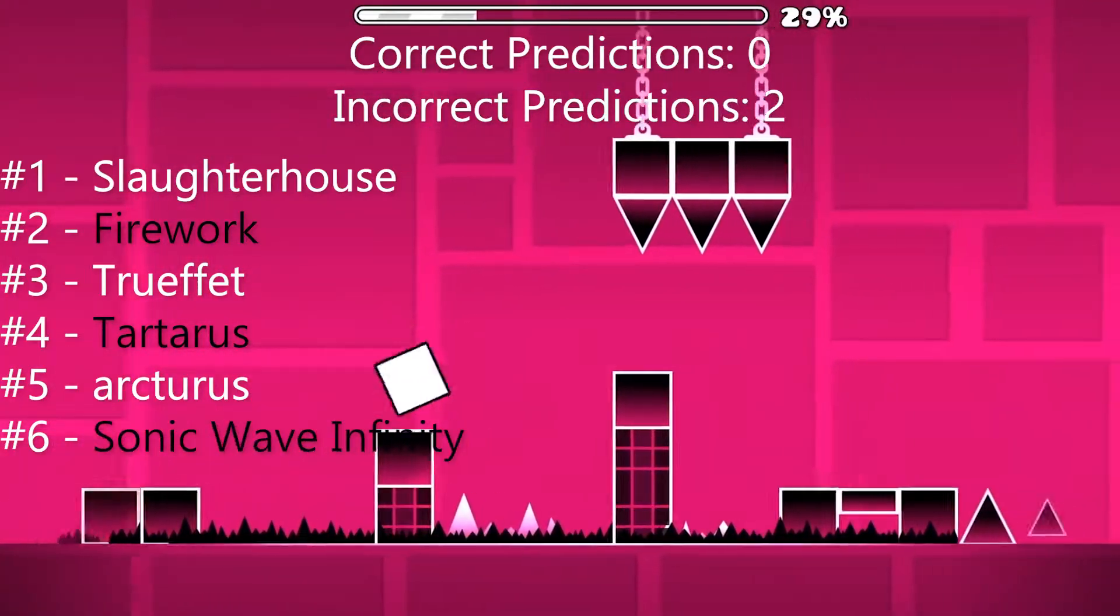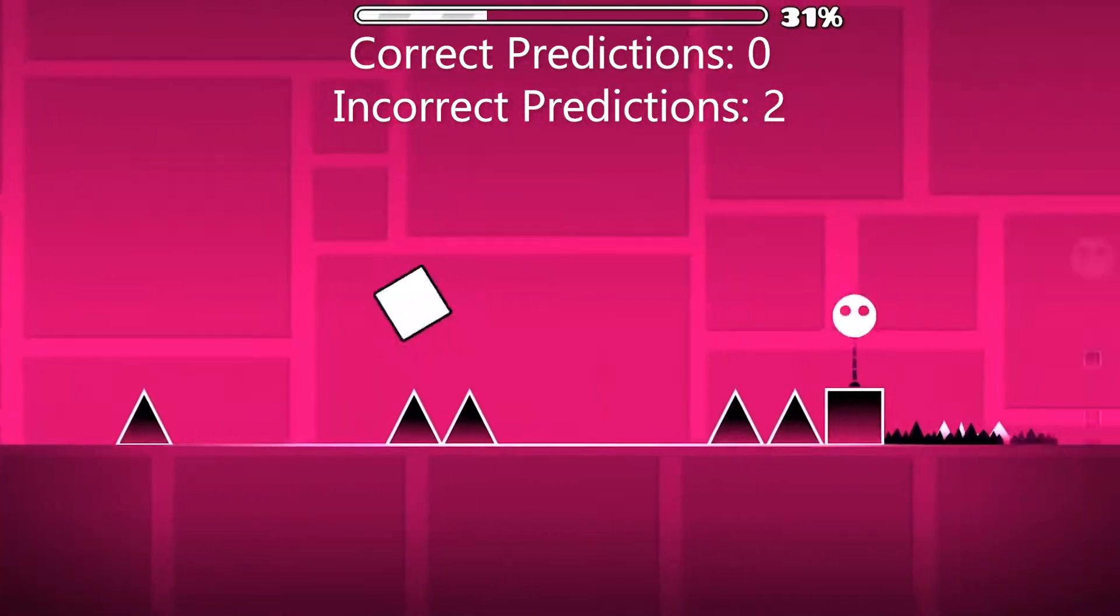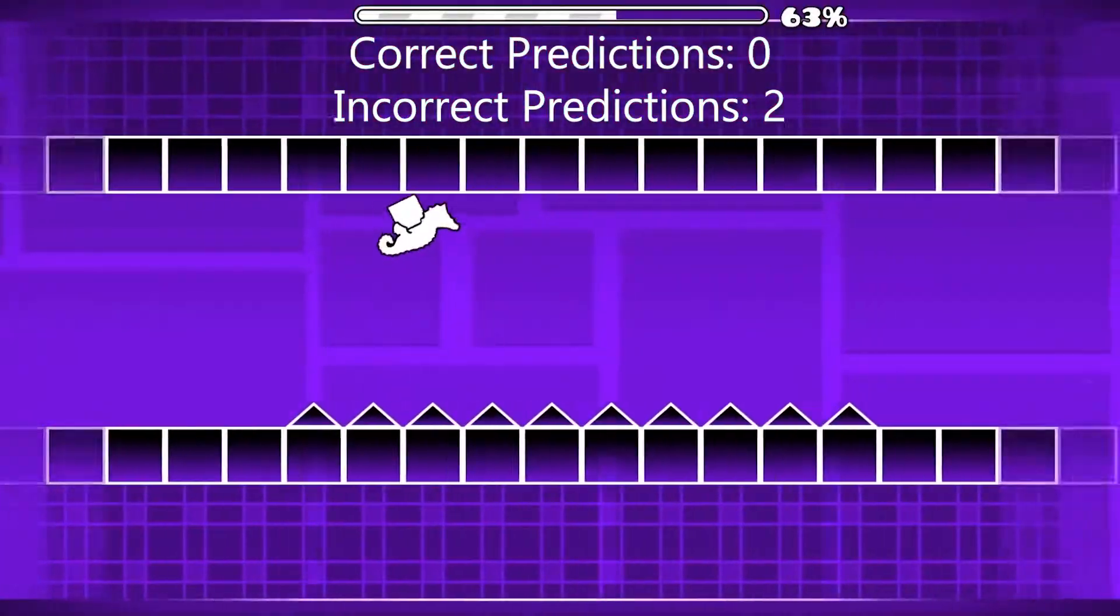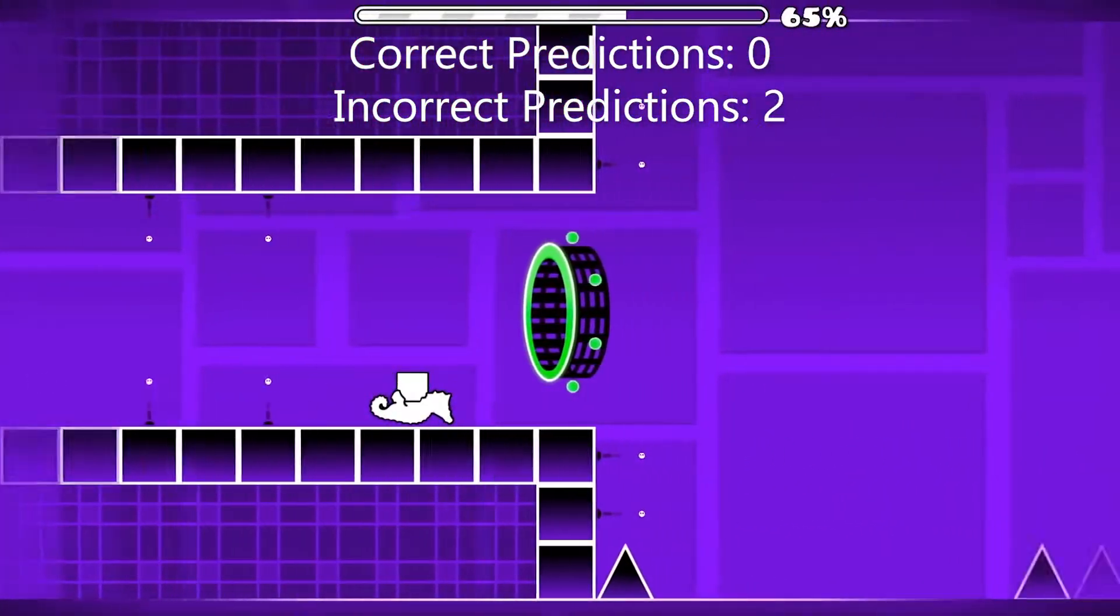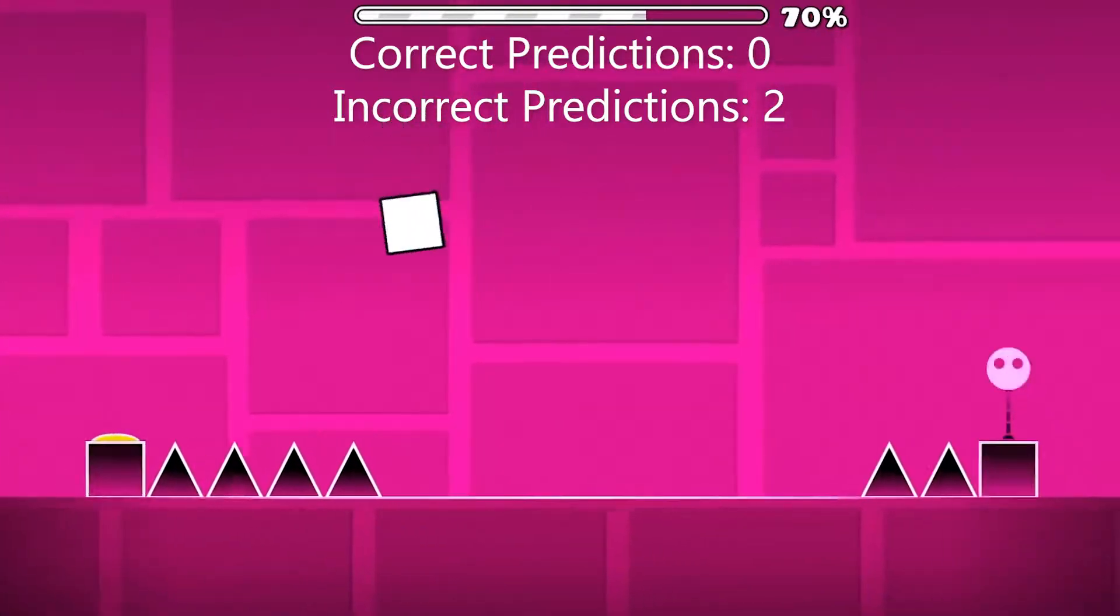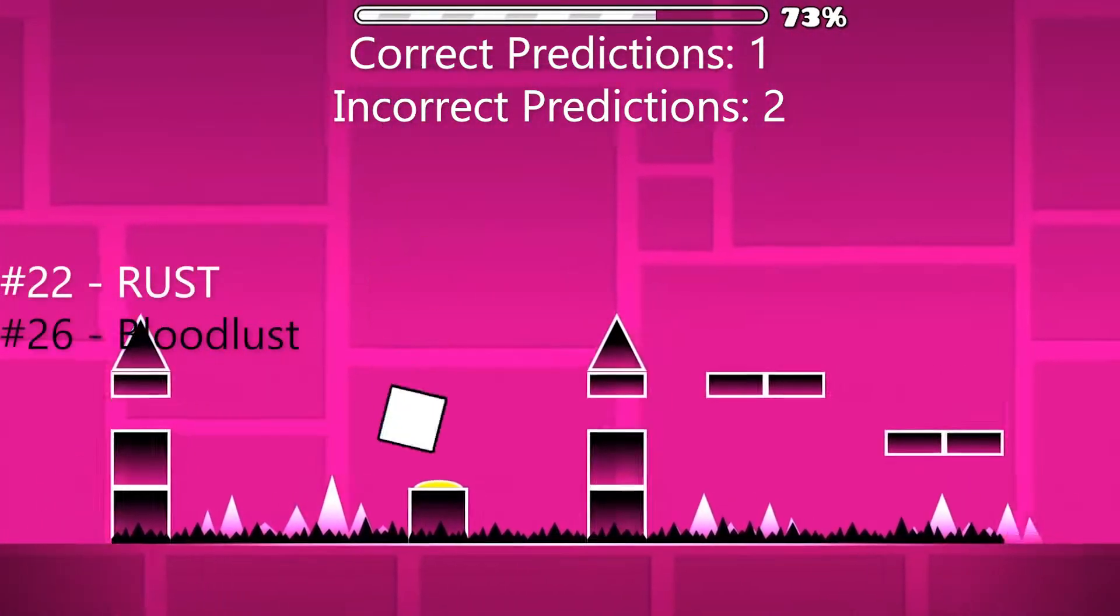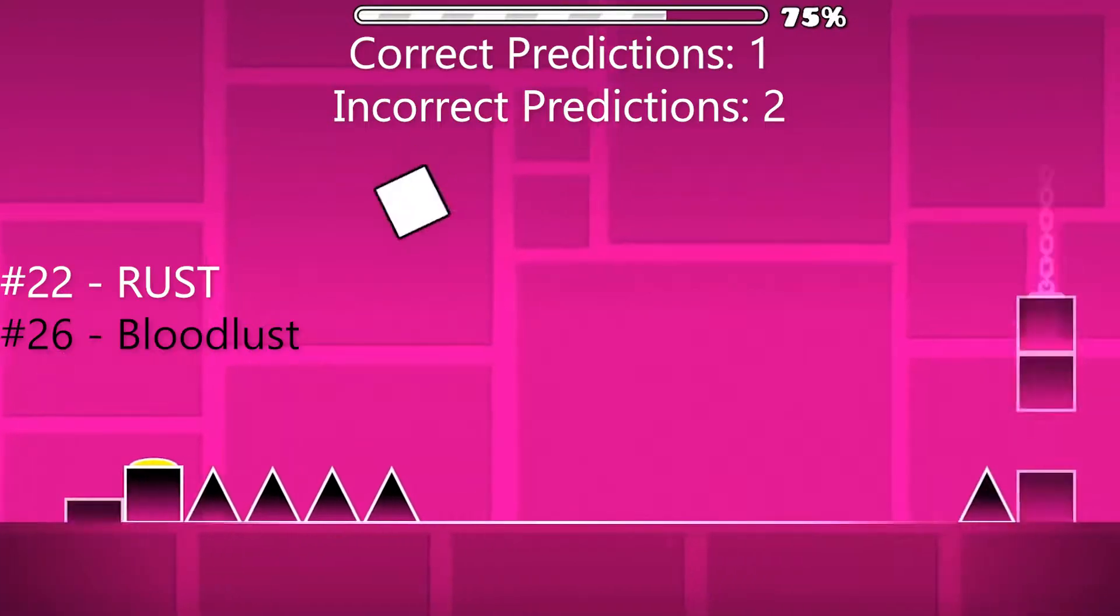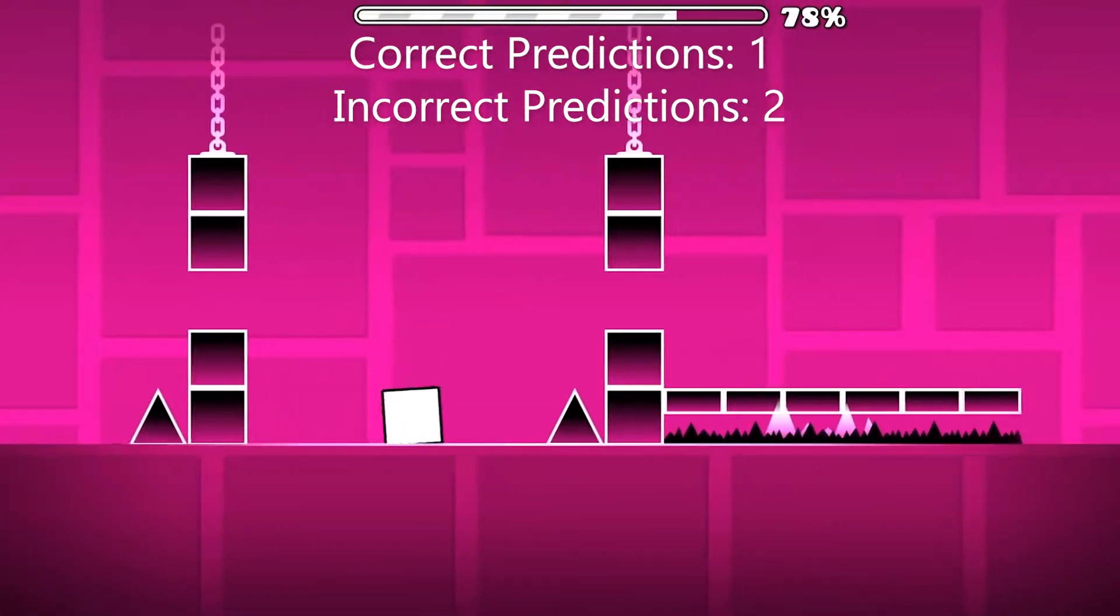Another level I'd like to discuss the placement of is Bloodlust. Bloodlust is at number 12 right now and I believe by the end of 2021 Bloodlust is gonna be at around 22nd place. That's right, I think there will be 10 more levels added to the demon list that are above Bloodlust difficulty.